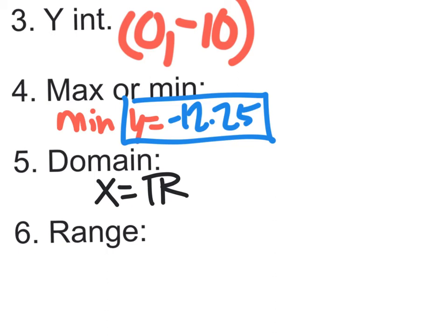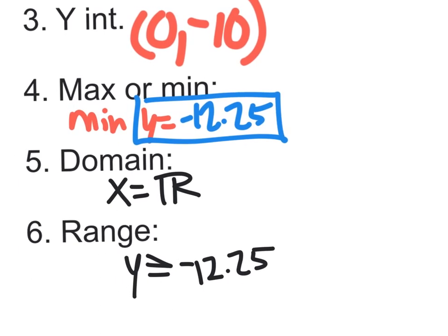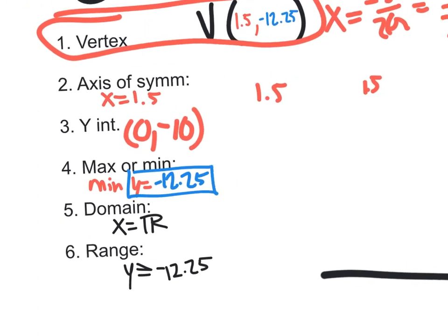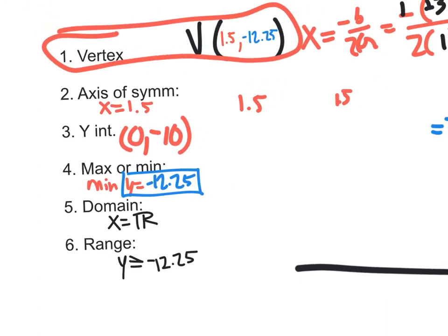And the range of this thing, we know it's opening up. We already know the minimum value. It's stated right above. It's negative 12.25. So what's the range in this case? Y is what? Is it above a certain value? Is it below a certain value? It is greater than or equal to negative 12.25. Where am I getting that 12.25 from? From the vertex.